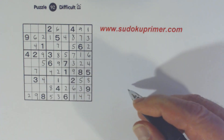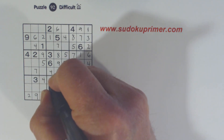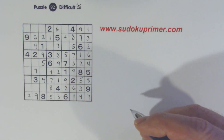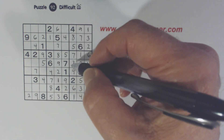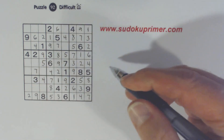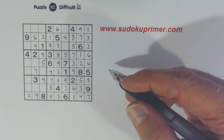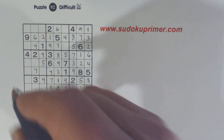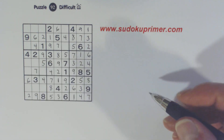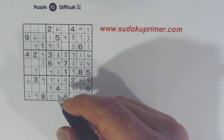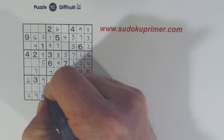We've got a 9 and an 8 there. Only have 7 and 9 missing there — starting to get pretty easy now. We've got a 9 in box 2. A 6 goes there, then a 7 goes here.